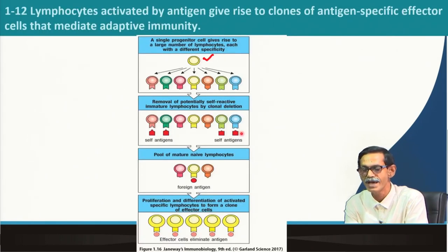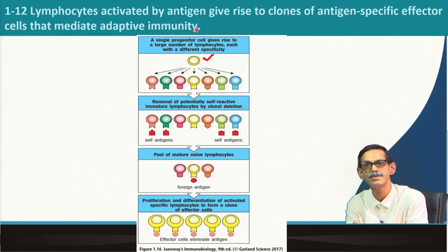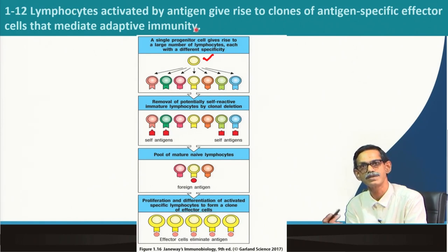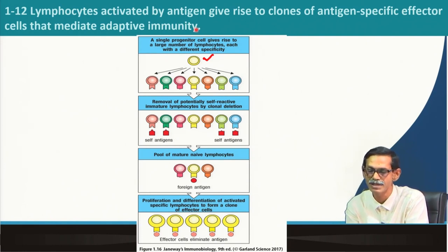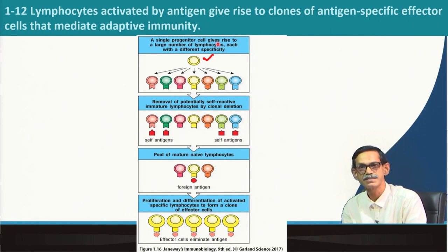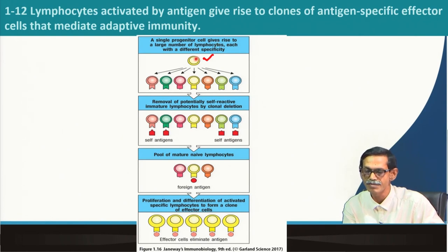Lymphocytes activated by antigen give rise to clones of antigen-specific effector cells that mediate adaptive immunity. These activated antigens give rise to clones that mediate adaptive immunity. Importantly, B cells or T cells do not develop any adaptive immunity against our own cells. This happens because a single progenitor — the hematopoietic stem cell — can produce multiple cells, and these cells can produce multiple cells with a variety of receptors.